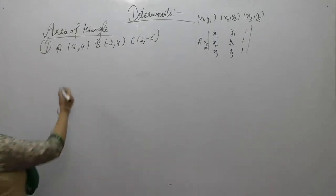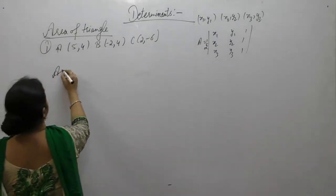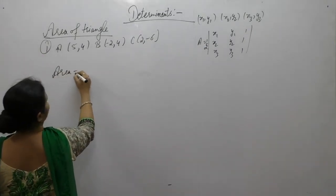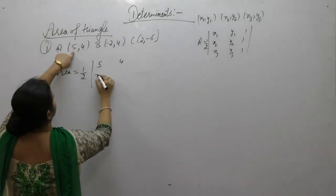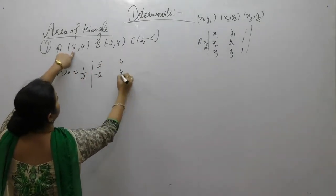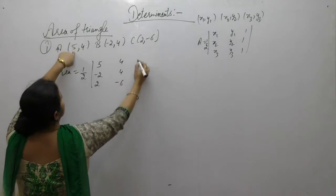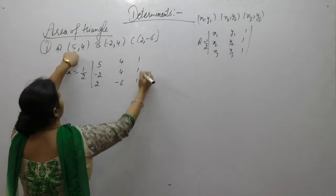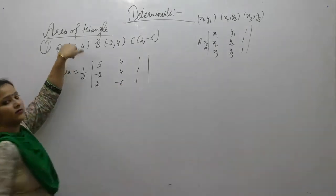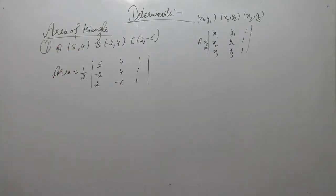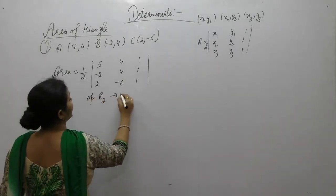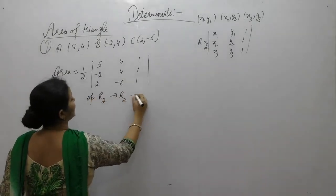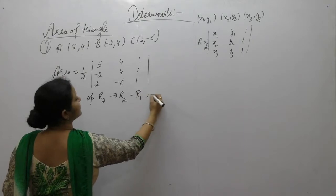So area of triangle is equal to 1/2 times the determinant with rows (5, 4, 1), (-2, 4, 1), (2, -6, 1). Now we have to solve this determinant. Operate R2 as R2 minus R1 for simplification.